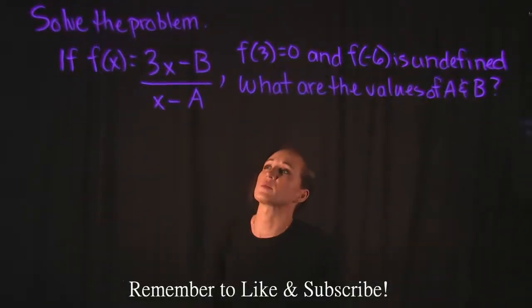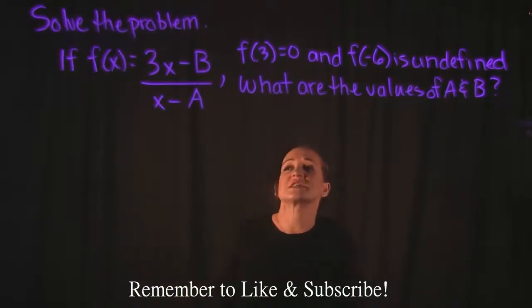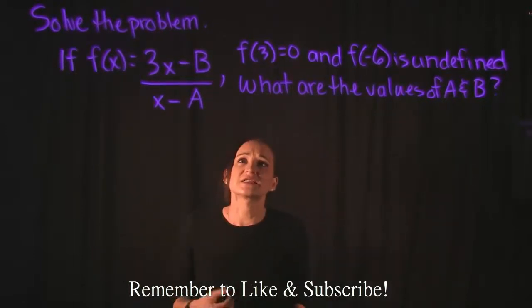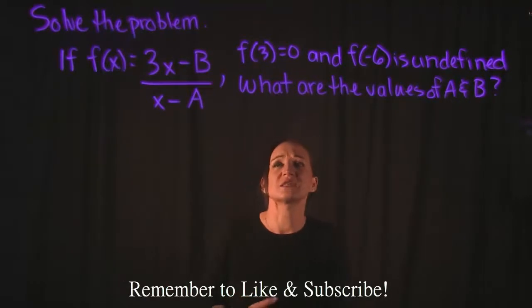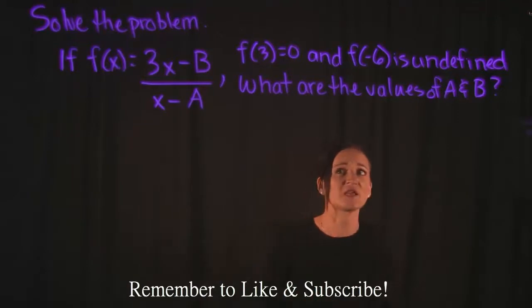So let's take a look at the next problem we're going to be working on. This problem says solve the problem. It says if f of x is equal to 3x minus b over x minus a, and it tells us that f of 3 is equal to 0 and f of negative 6 is undefined, what are the values of a and b?